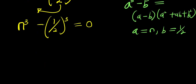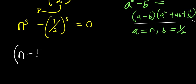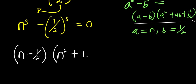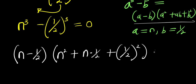So let's apply this identity to expand: we have (n minus 1 over 2) times (n² plus n times 1 over 2, plus (1 over 2) to the power of 2), and this equals 0.